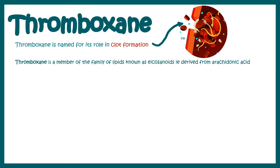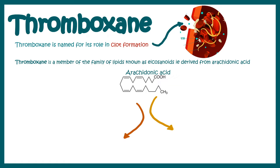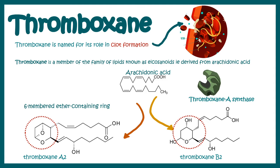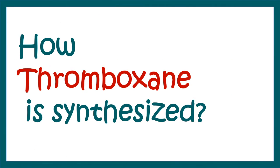That means they are derived from arachidonic acid. Arachidonic acid can get converted to thromboxane A2 or thromboxane B2, and the key enzyme helping in this process is known as thromboxane A synthase. Both thromboxane types are characterized by their six-membered ether-containing cyclic rings — this is a characteristic chemical feature of thromboxanes.